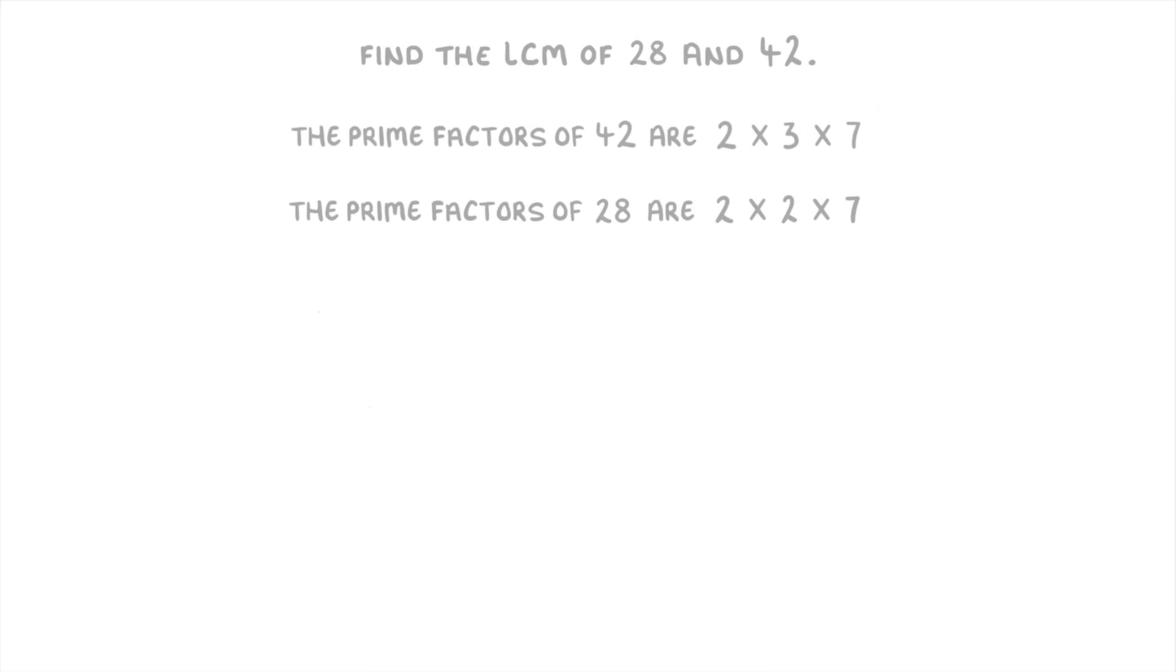For example, in this question, we're being asked to find the lowest common multiple of 28 and 42, and we're given the prime factors of each one in the question. To find the lowest common multiple, we have to look at the prime factors of each one, and multiply together all the prime factors of both numbers.